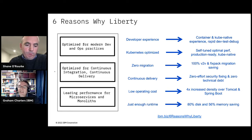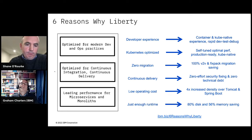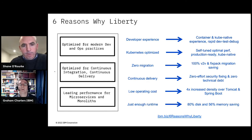When I talk about these six reasons, I like to collapse them into three groups. The first two — developer experience and Kubernetes optimized — are about optimizing the development and operational experience for modern cloud practices. On the developer experience side, we've done a lot of work to streamline the developer experience and increase developer productivity. When you think about the life cycle of an application update, a lot of time is spent making changes to code, building that code, and testing it. We've done a lot of work in something called dev mode to enable that rapid developer experience, and I'll demonstrate that.